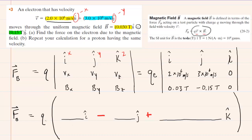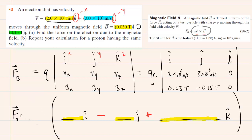We've created a cross product template. It's very important to note that we have left a space for the x component, the y component, and the z component, and that there's a minus sign between x and y and a plus sign between y and z — that's always the case for cross products. For the charge q, that's the charge on an electron: negative 1.6×10⁻¹⁹ coulombs.